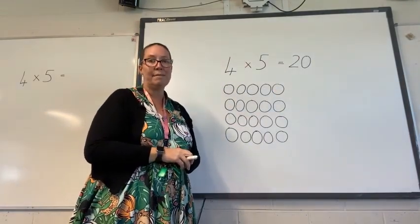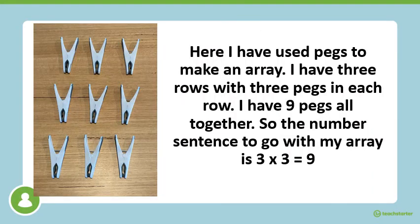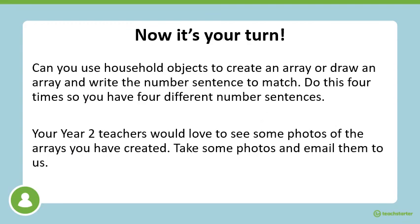Now it's your turn to draw some arrays to match your number sentences. Here I have used pegs to make an array. I have three rows with three pegs in each row. I have nine pegs all together. So the number sentence to go with my array is three multiplied by three equals nine. Now it's your turn. Can you use household objects to create an array or draw an array and write the number sentence to match? Do this four times so you have four different number sentences. Your year two teachers would love to see some photos of the arrays you have created.